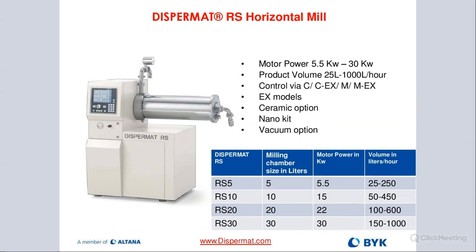We offer a range of horizontal media mills called the Dispermat RS for manufacturing, all the way from 25 liters per hour to 1,000 liters per hour — we can make them even bigger depending on the application. Some customers use them in pass-through or circulation mode. We also offer a nano kit, a vacuum option, and explosion-proof models available in the horizontal media design.